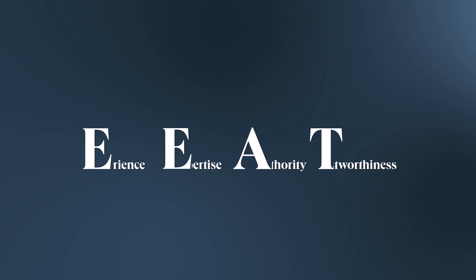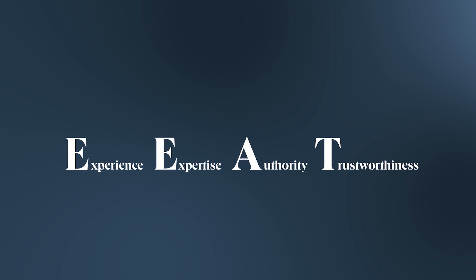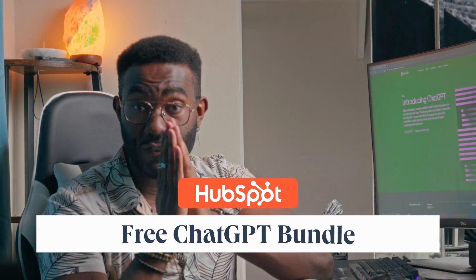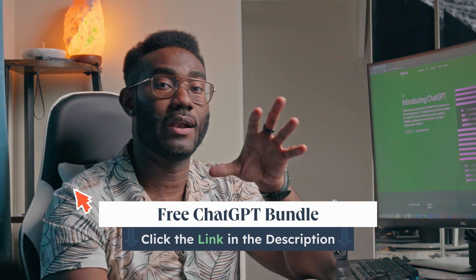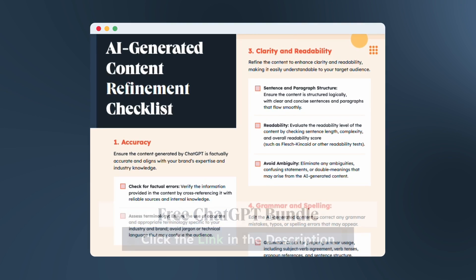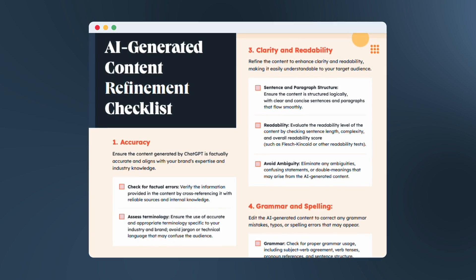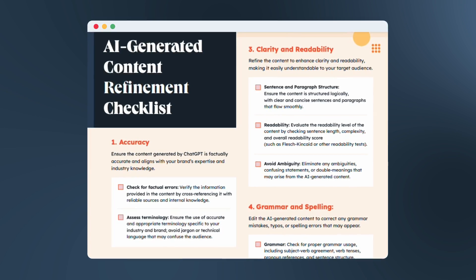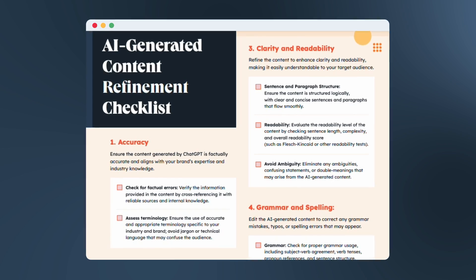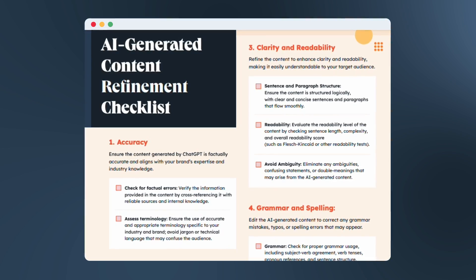If you don't know what that stands for, it means experience, expertise, authority, and trustworthiness. EEAT is the marquee metric that Google uses to determine the quality of your page. That's why it's essential to keep a human expert in the process for the sake of quality control and accuracy. Luckily, there's a free ChatGPT bundle at HubSpot that includes some incredible resources, including a handy content refinement checklist that makes it easy to double-check the AI's output in all the right ways.